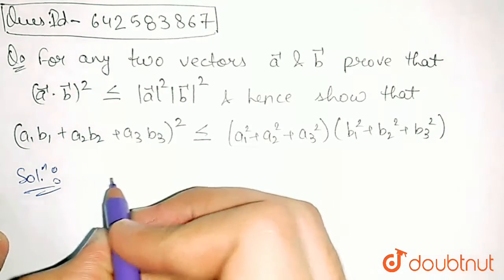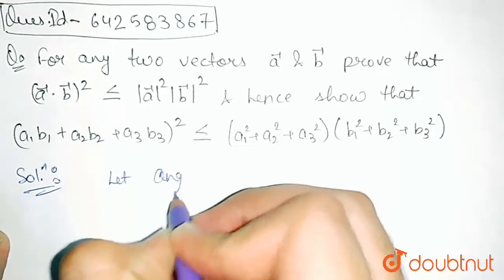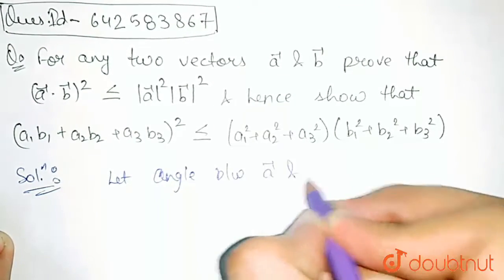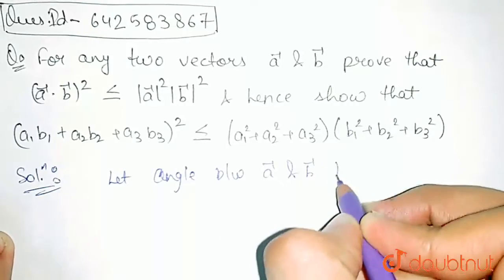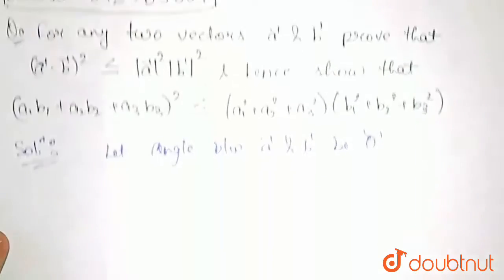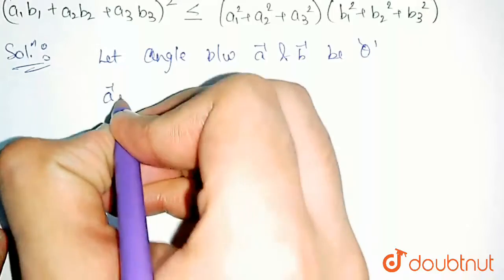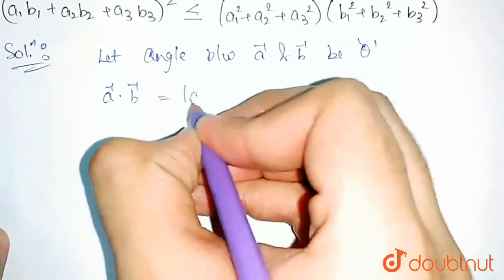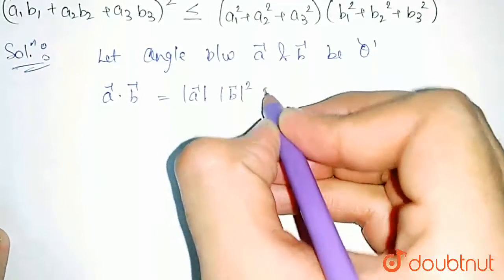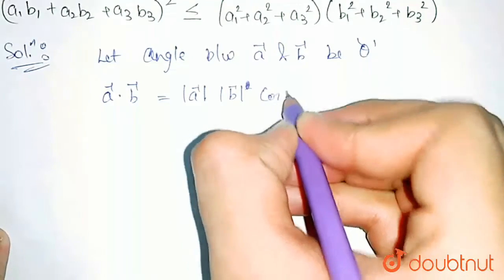First of all, let us assume the angle between A vector and B vector be theta. So, we can write A dot B is equal to magnitude of A into magnitude of B into cos theta.